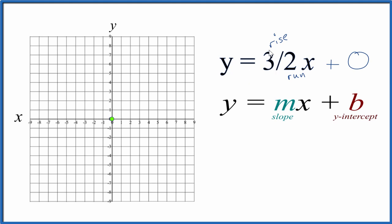So we rise 1, 2, 3, and we run 1, 2. Go to our y-intercept here, rise 1, 2, 3, run 1, 2, and we have our point.